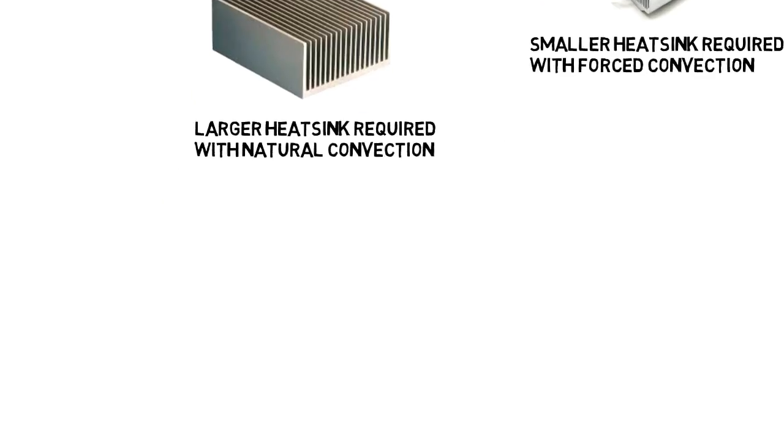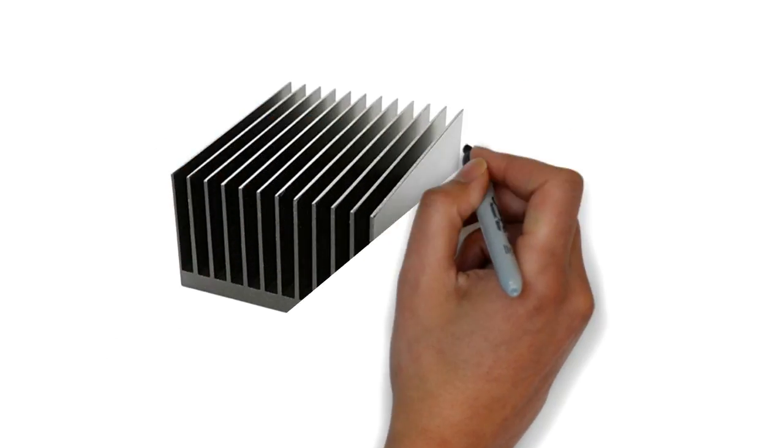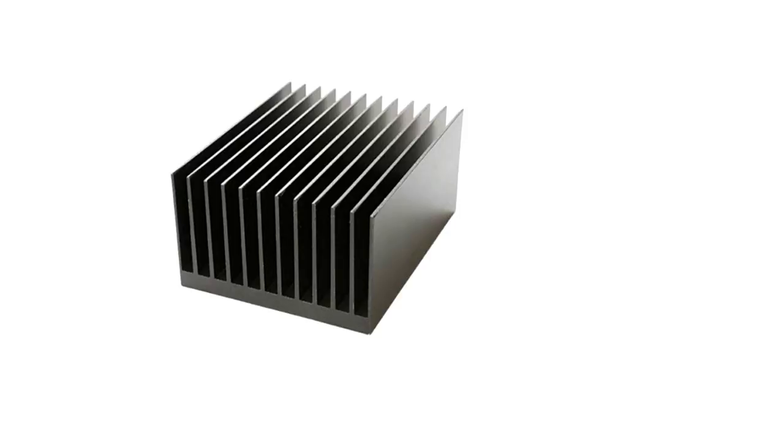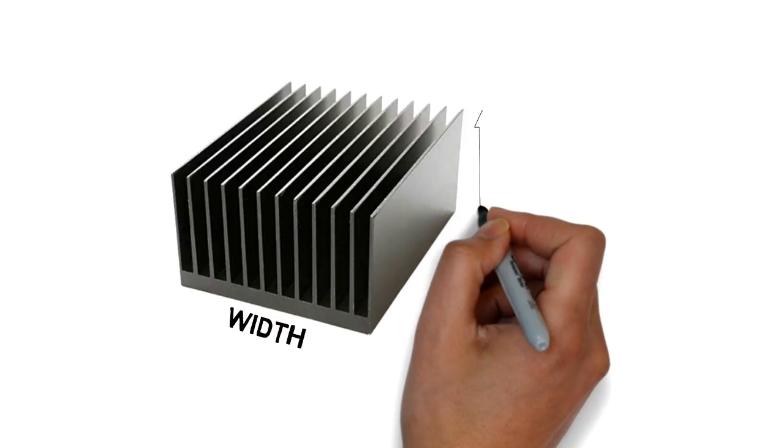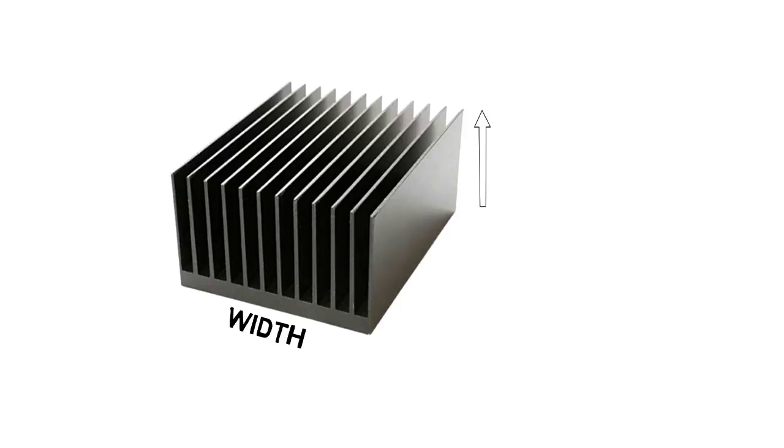The average performance of a typical heat sink is linearly proportional to the width of the heat sink in the direction perpendicular to the heat flow and approximately proportional to the square root of the fin length in the direction parallel to the flow.